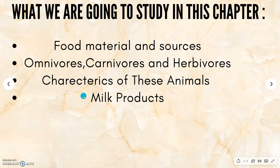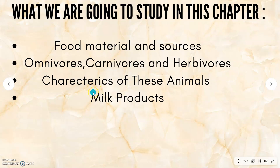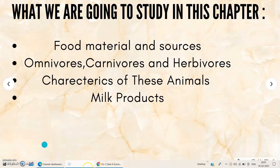A camel is adapted to live for many days and many weeks without water. It has very thick feet and long legs which help it to keep its body away from the heat which is absorbed by the sand during the day. A polar bear lives in extreme cold climate, which forces it to have a very thick coat so that it gives it heat.